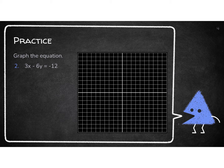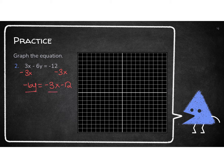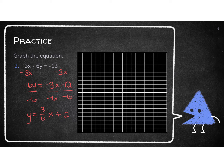Let's look at number 2. We are going to do the same thing — we need to get the y alone. So I need to move this positive 3x to the other side first, so I am going to have a negative 6y. Don't forget that the negative comes on down. I can't combine negative 3x and negative 12 because one has an x and one doesn't. Now the y is still not alone, so I need to get rid of multiplying by negative 6 by dividing everything by negative 6. A negative over a negative gives me a positive, and I could reduce my fraction — 3 over 6 is the same as 1 third.